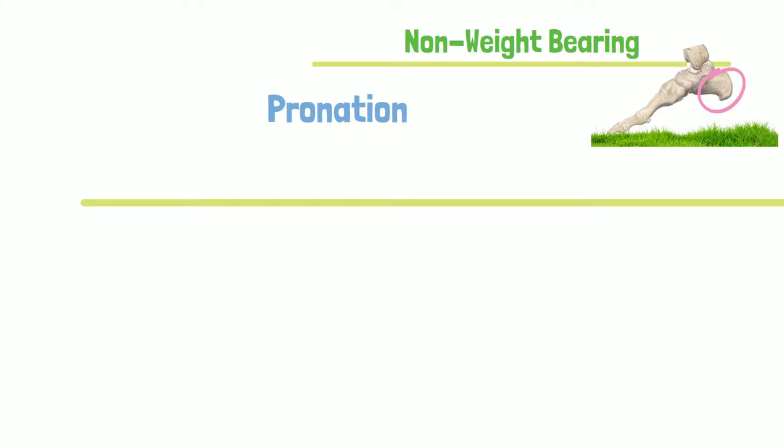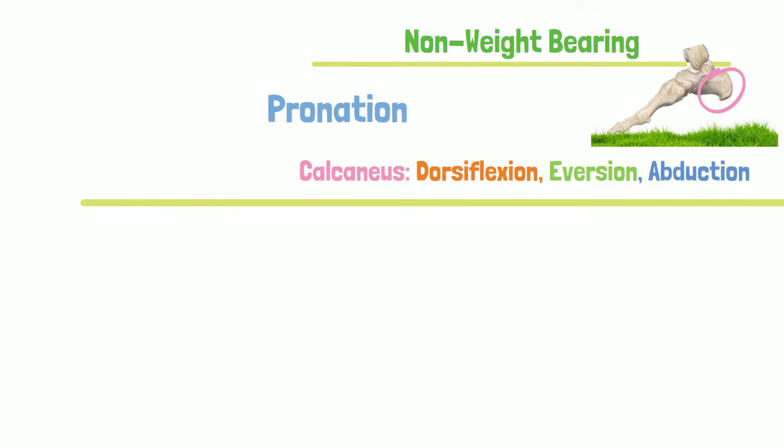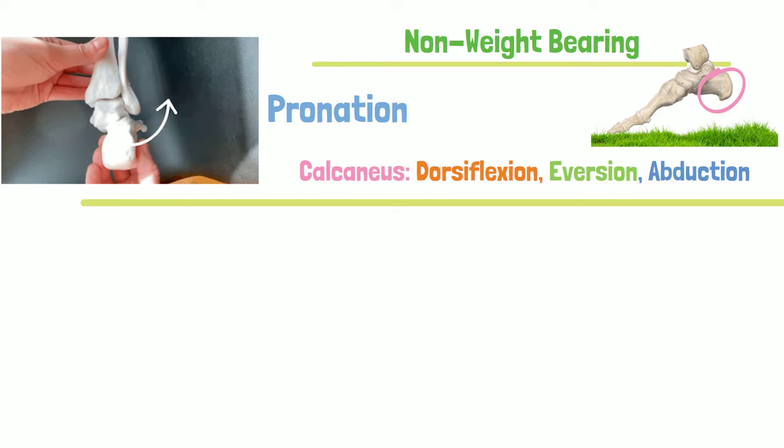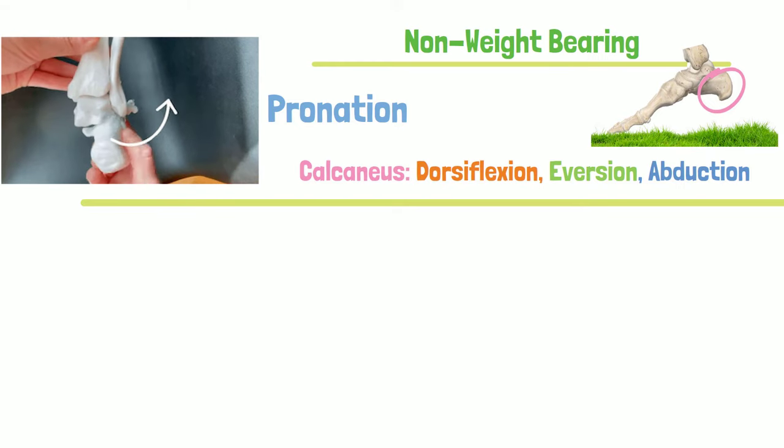Pronation is created as a combination of dorsiflexion, eversion, and abduction, thus an up and out movement of the foot.